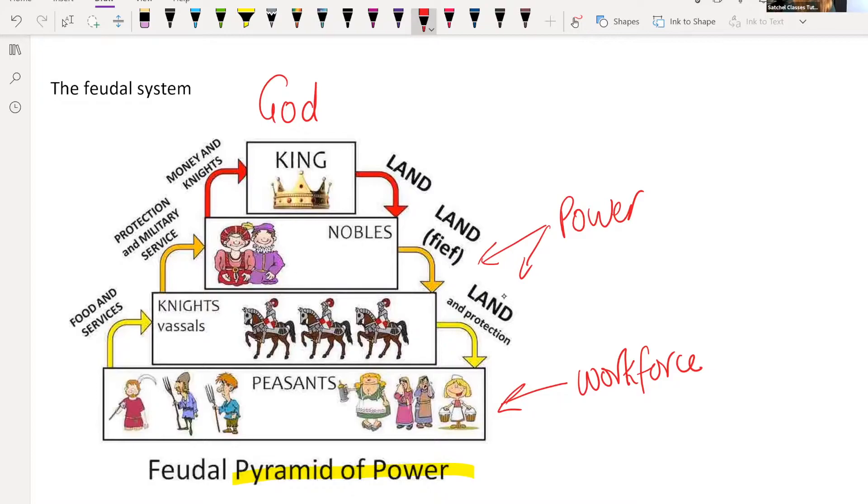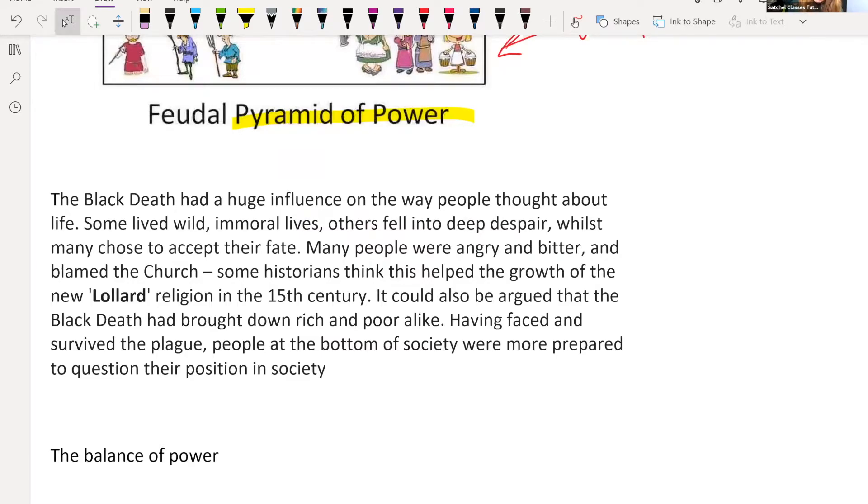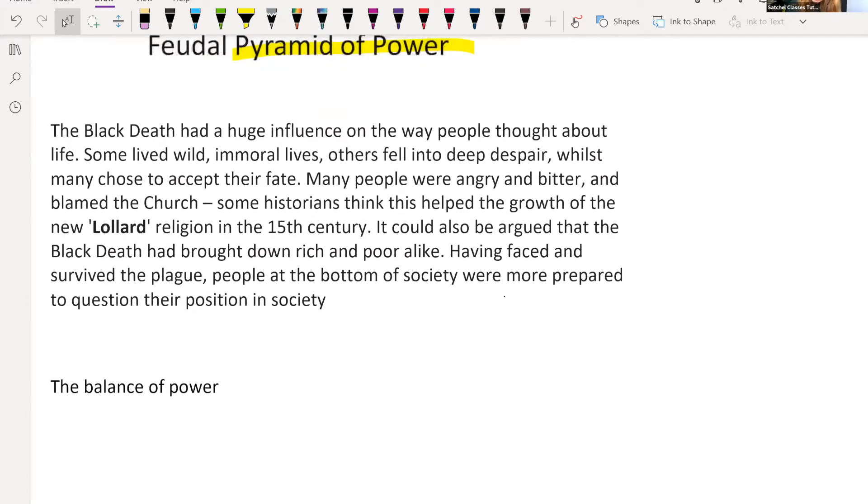Now the Black Death turns this on its head and we'll have a look at why. The Black Death had a huge influence on the way people thought about life. Some lived wild immoral lives, others fell into deep despair, while many chose to accept their fate. We looked at this passage in the first video in this series. Many people were angry and bitter and blamed the church. Some historians think this helped the growth of a new religion in the 15th century. It could also be argued that the Black Death had brought down rich and poor people alike. Having faced and survived the plague, people at the bottom of society were more prepared to question their position in society.